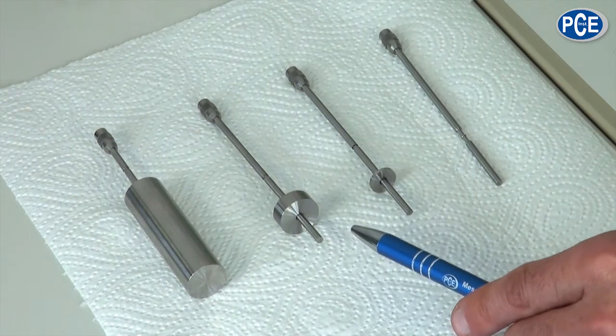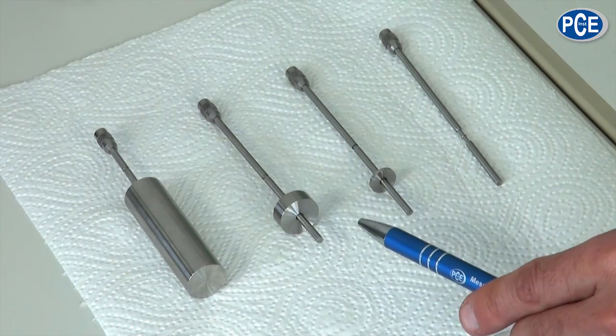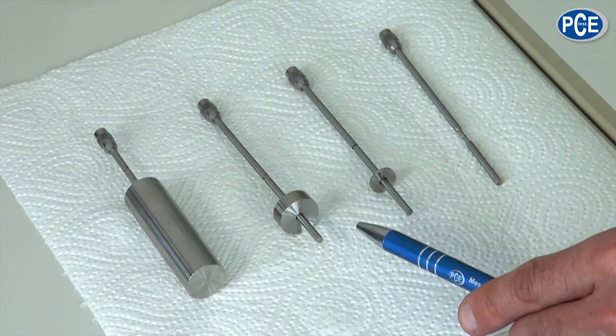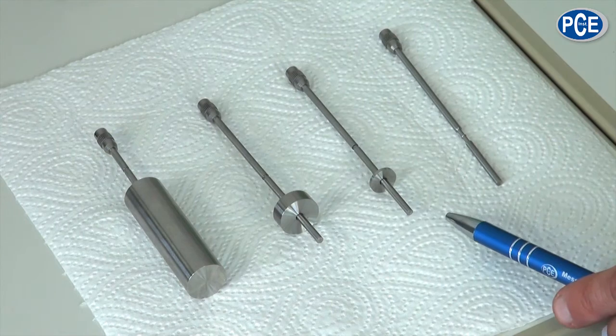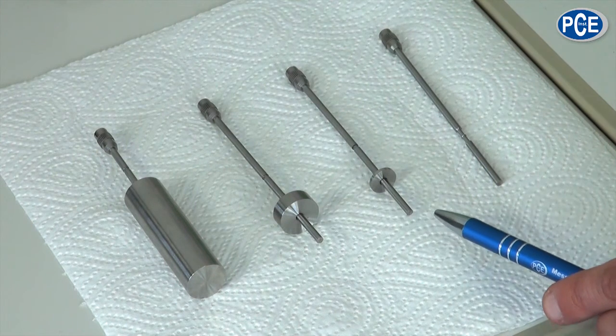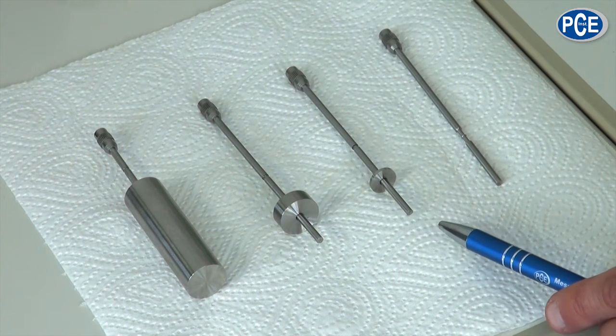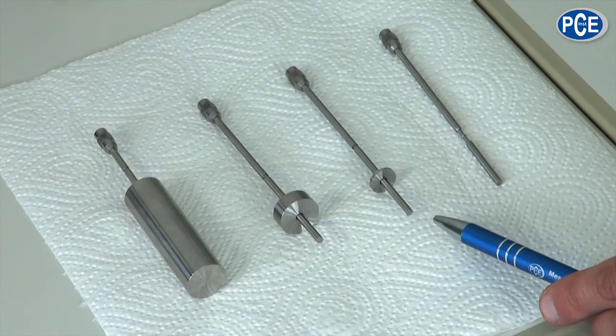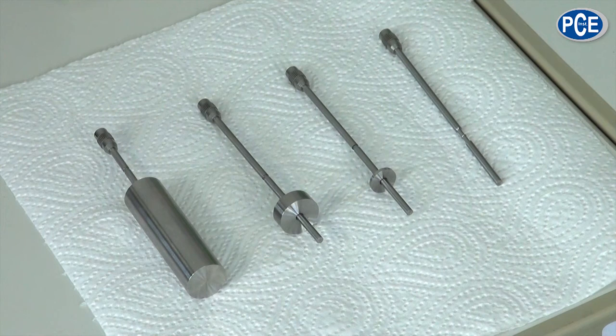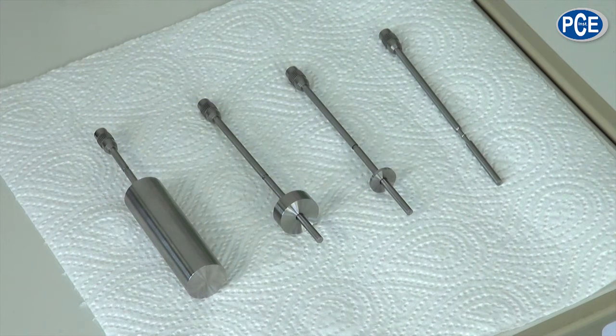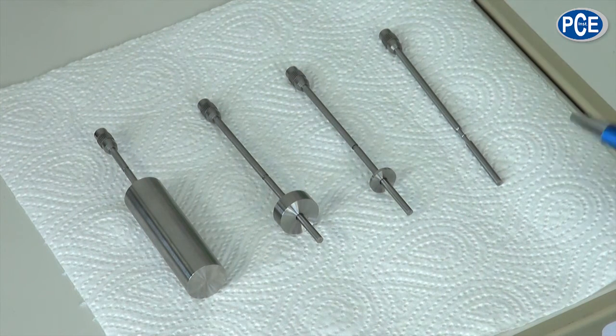The rotation body 2 covers a larger measuring area of up to 5000 mPa·s. Rotation body 3 goes a step higher, covers a measuring area of up to 20,000 mPa·s. Rotation body 4, the smallest rotation body, has the highest measuring area of up to 100,000 mPa·s.